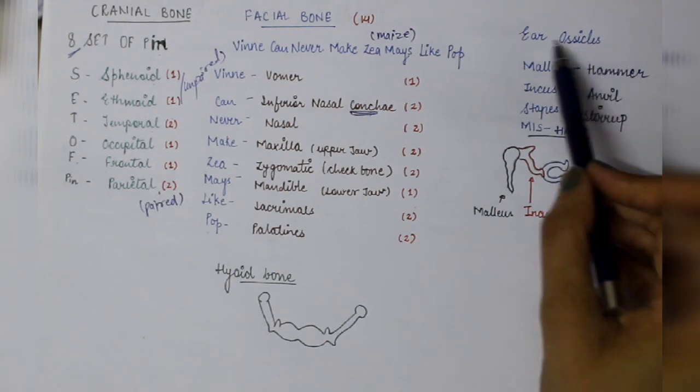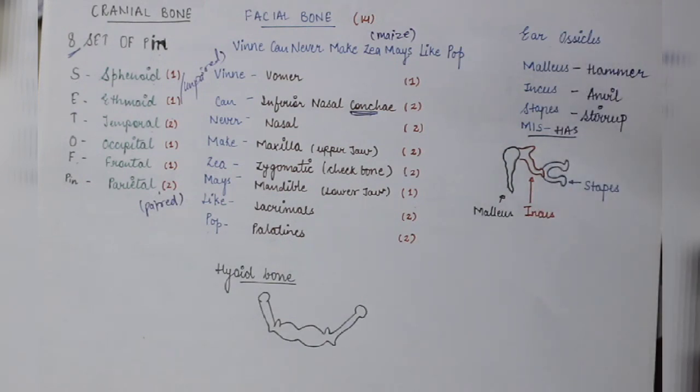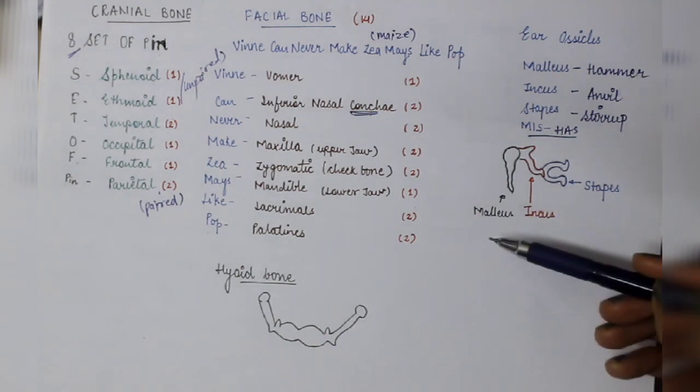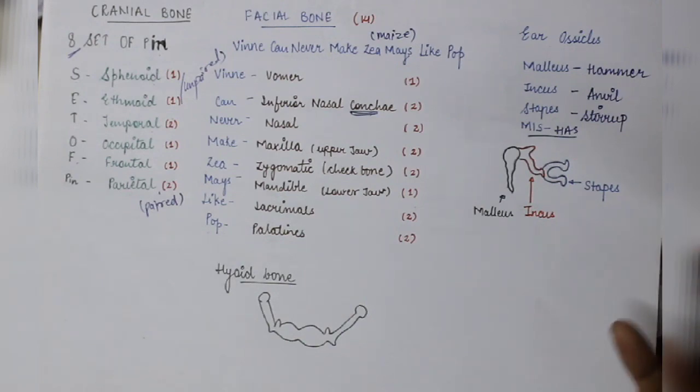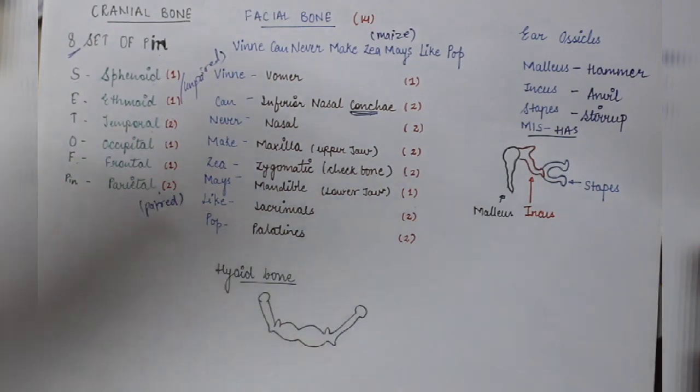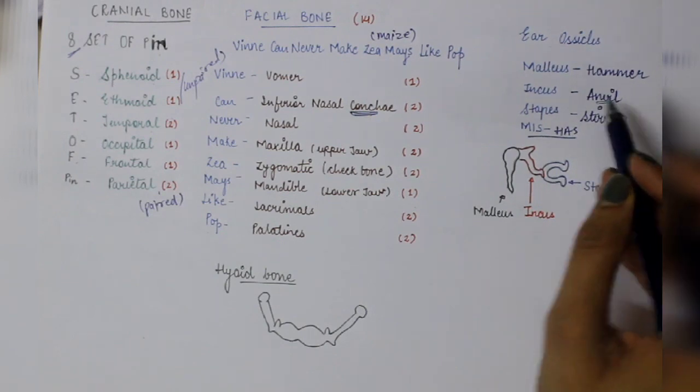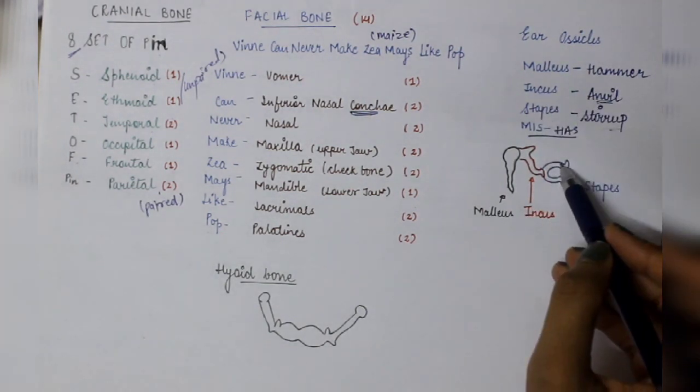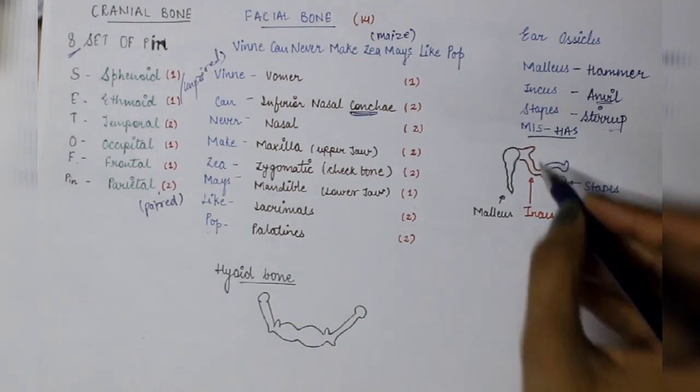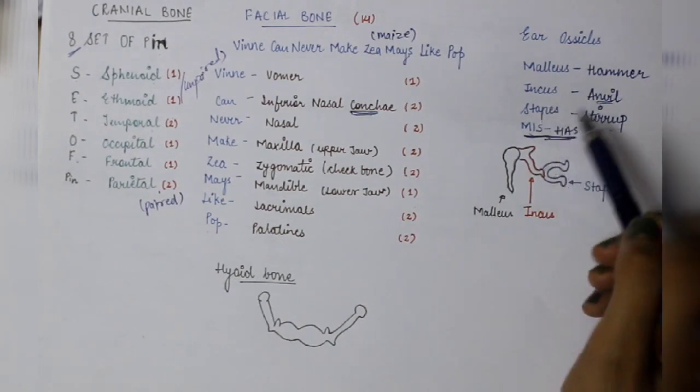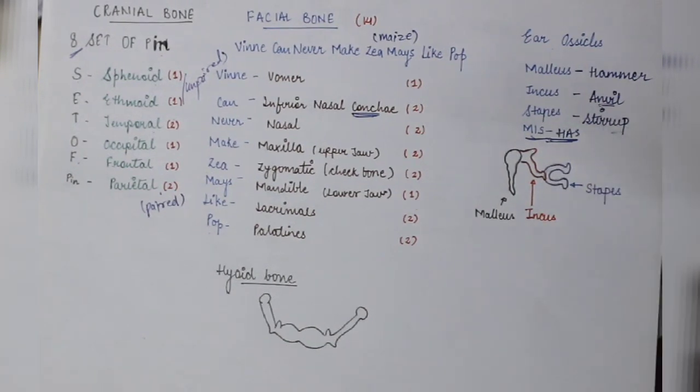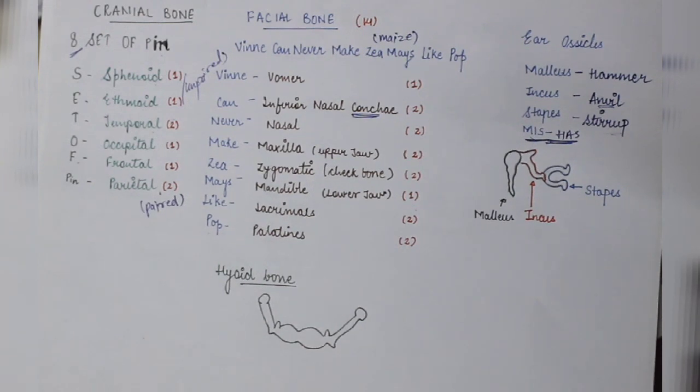These are ear ossicles. Three bones are present in your ears. What is the name? Malleus, Incus, Stapes. These three bones are in the ears. Malleus is hammer shape, Incus is anvil shape. Anvil, if you have a shoe maker or mochi, the structure to clean your shoes. And Stapes is stirrup shape. How can you remember this? Miss has: Malleus, Incus, Stapes. Hammer, Anvil, and Stirrup.